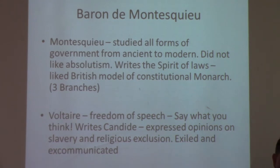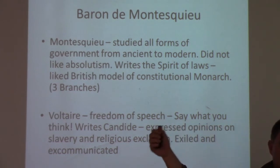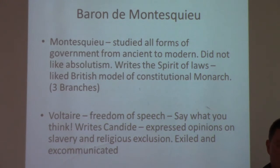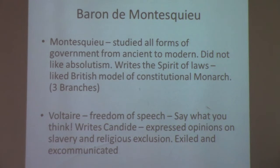Montesquieu liked how the British implemented three separate branches: the executive branch, the legislative branch, and the judicial branch — the prime minister, parliament, and the court system. To Montesquieu, you must have a separation of powers; it is the only way to maintain liberty, where three branches — an uneven number — can check and balance each other. We use Montesquieu's system in the United States today, where no one branch can be more powerful than the others.